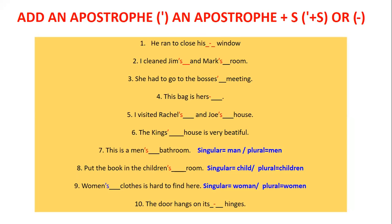¿Por qué tiene un guioncito y no un apóstrofe? Because his as such is already a possessive — ¿se recuerdan que les enseñé? So 'he ran to close his window' — él corrió a cerrar su ventana. The apostrophe S doesn't apply here because we already have the possessive 'his'. That's why it has a dash instead. I clean Gym and Mark's room — limpié el cuarto de Gym y de Mark — apostrophe S applies because neither word ends in S.